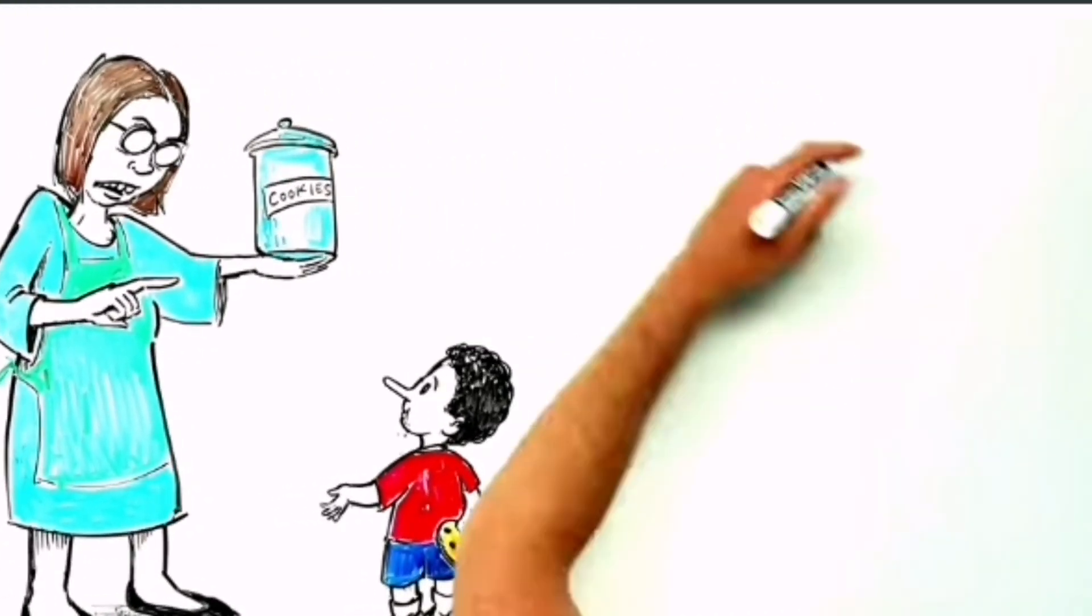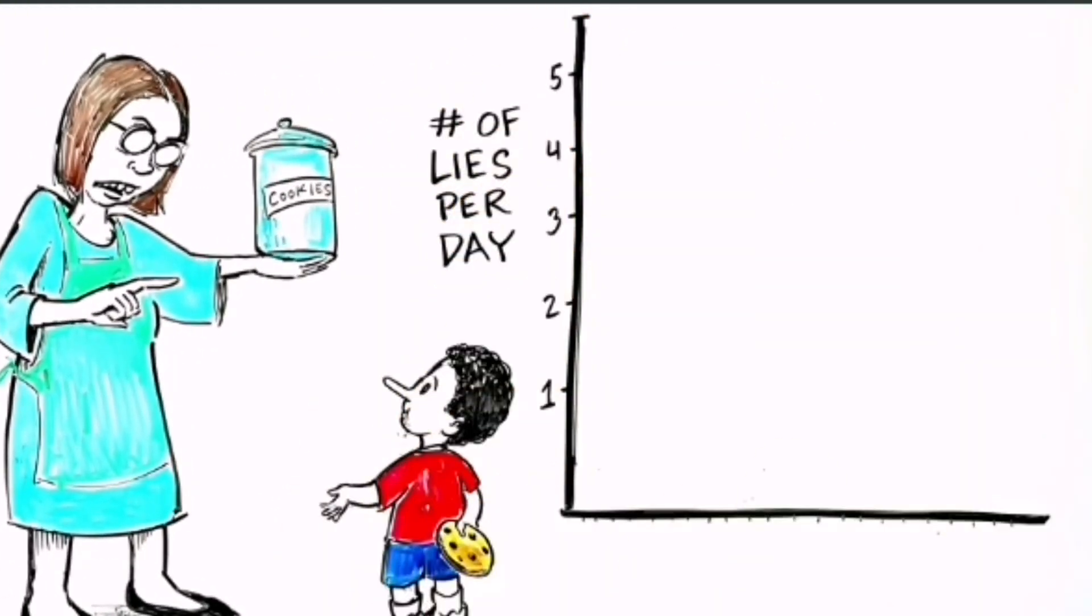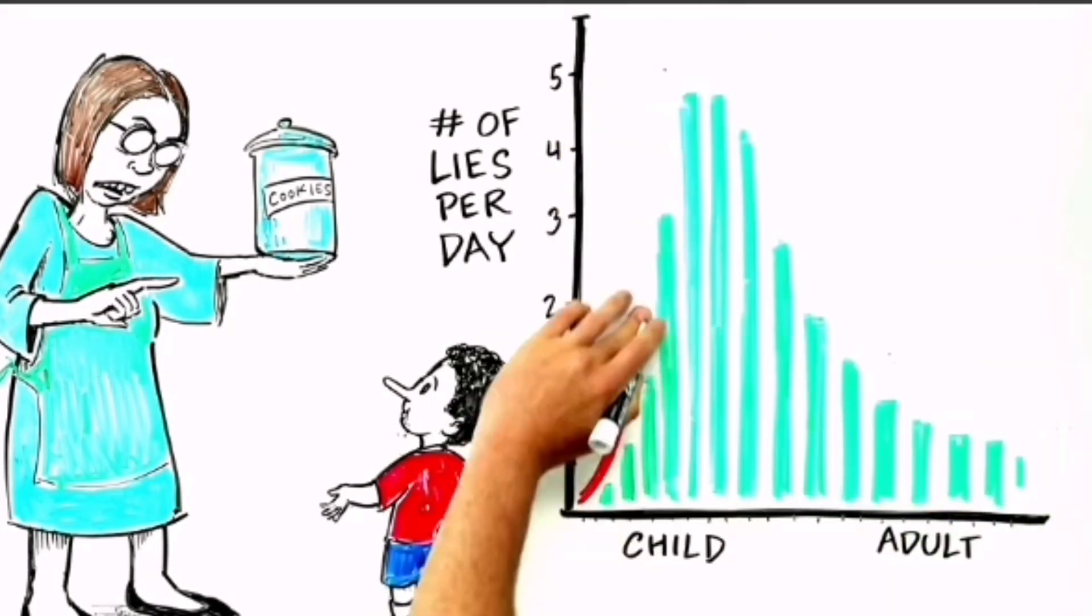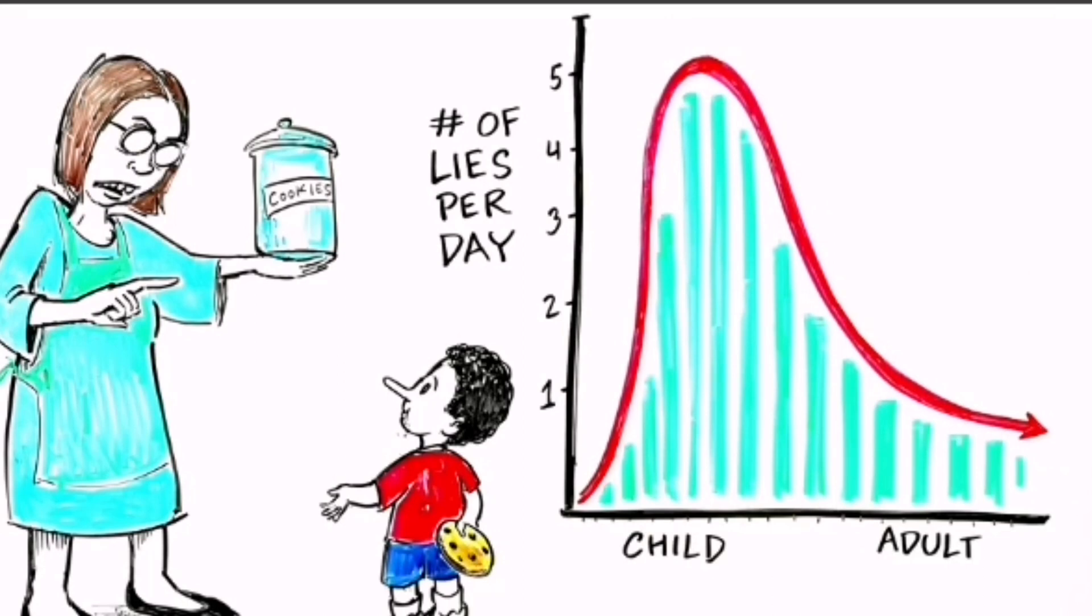Lying tends to decrease between ages three and 14, possibly because children become more aware of how lying harms other people. On the other hand, adults are capable of more sophisticated antisocial lies than children.